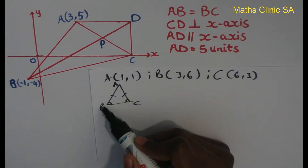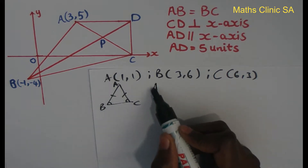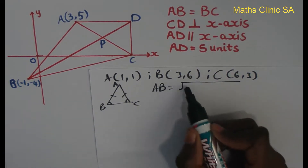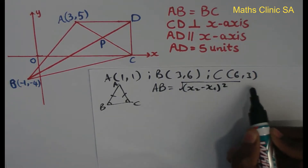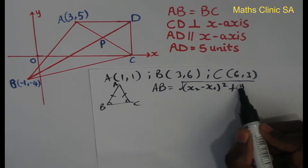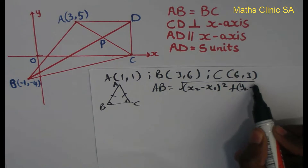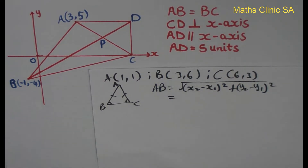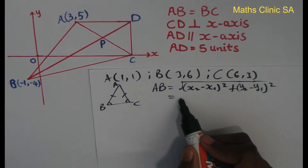So the distance AB equals the square root of (X2 minus X1) squared plus (Y2 minus Y1) all squared — using the distance formula.